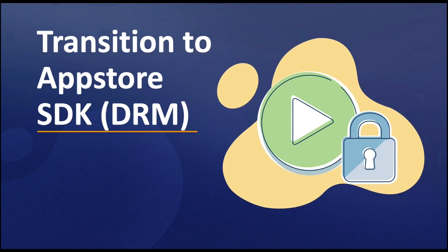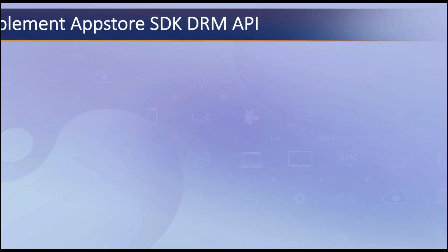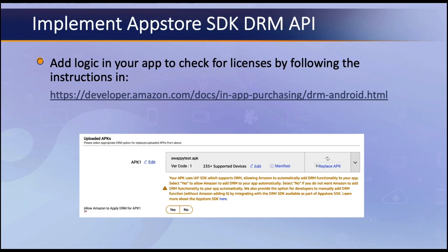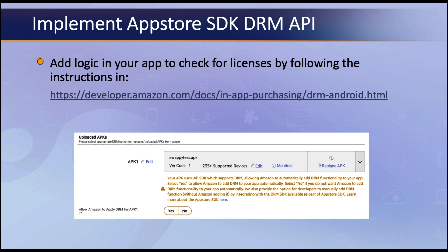Let's see how you can transition to the new DRM API. Assuming you have already integrated the App Store SDK, you need to add logic in your app to check for licenses. You can do this by following the instructions on the link shown on screen, or find the link in the description below. This link shows you how to enforce DRM in your app. Once you have done this, build a new version of your APK, upload it into the developer console, and submit it. If you upload an APK that uses an older IAP SDK or no SDK at all, then you will see the following warning.